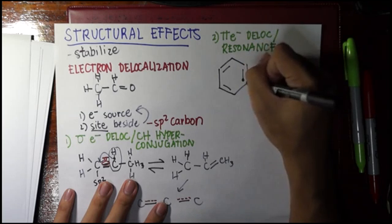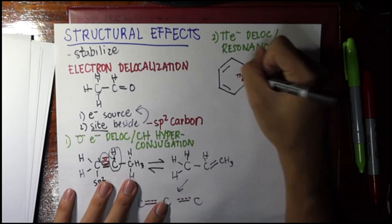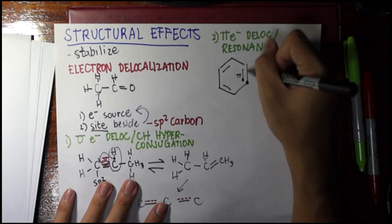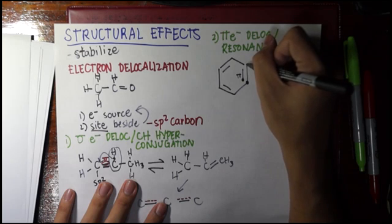We have here, for example, let's use this carbon—the electron source we have is a pi bond, we have a pi electron here. And beside this carbon, whether it is this one or this one, these are both sp2 because this one has a pi bond and this one has a pi bond.